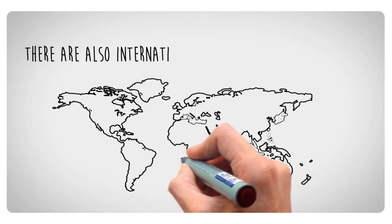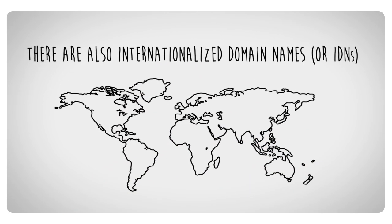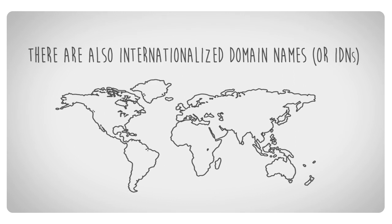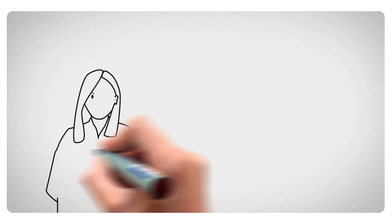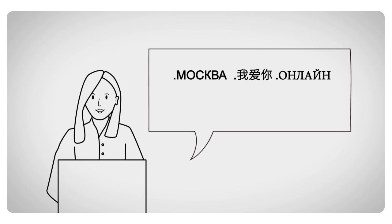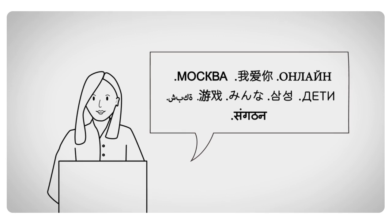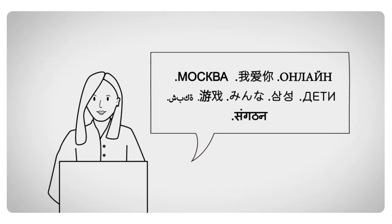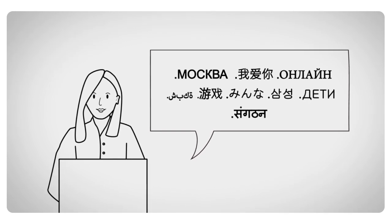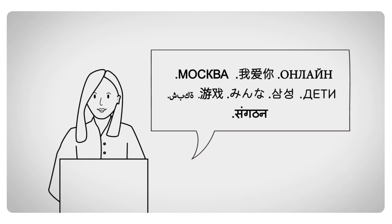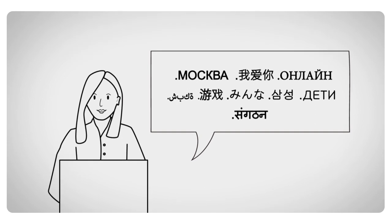There are also internationalized domain names, or IDNs. Such domain names can contain letters or characters from non-Latin scripts — for example Arabic or Chinese — enabling Internet users to access domain names in their own language.